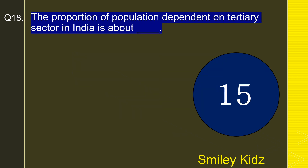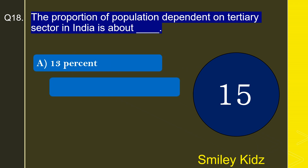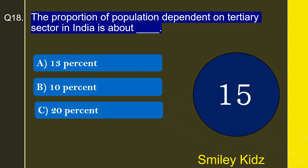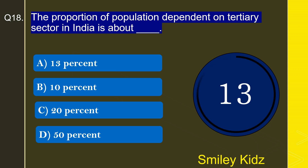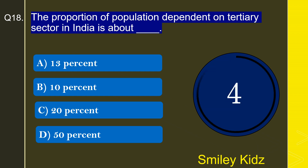Question number 18: The proportion of population dependent on the tertiary sector in India is about how much? Options are 13 percent, 10 percent, 20 percent, or 50 percent. The correct answer is 20 percent. The proportion of population dependent on the tertiary sector in India is about 20 percent.